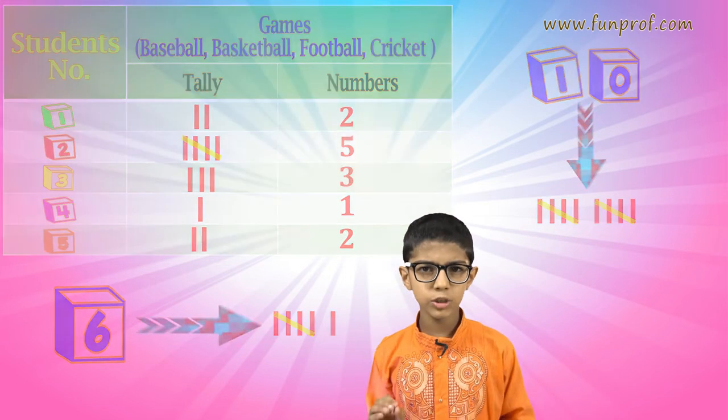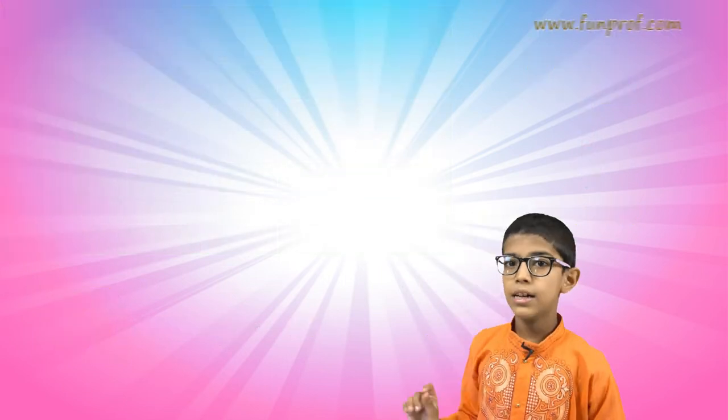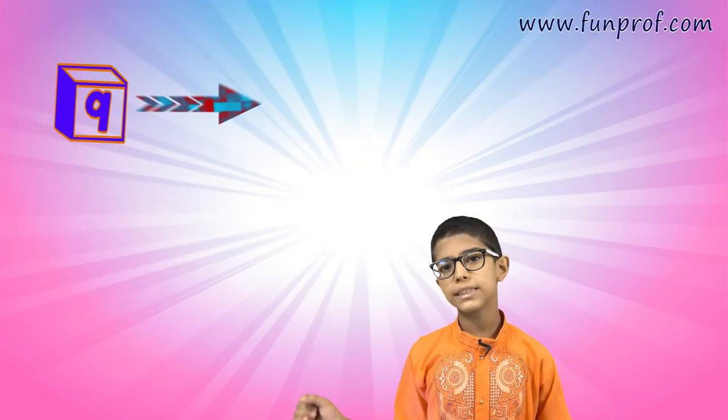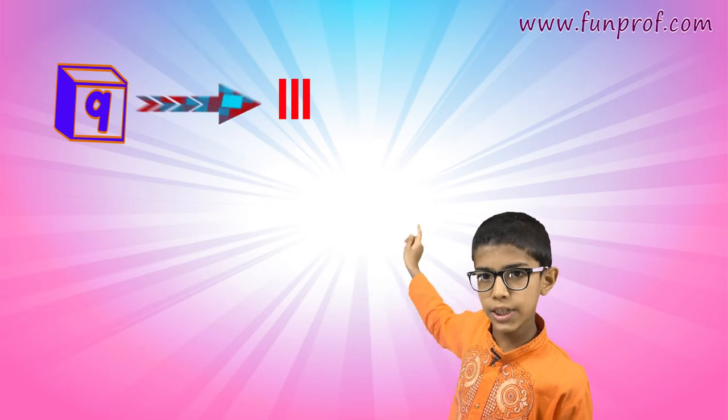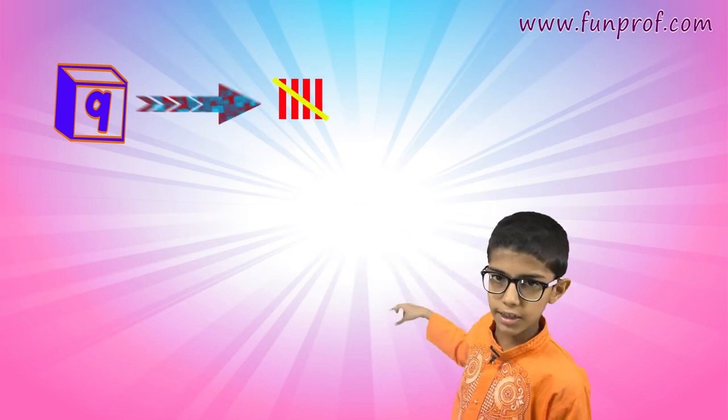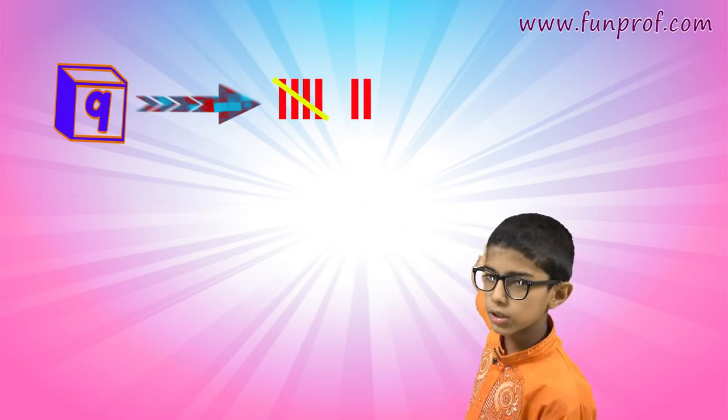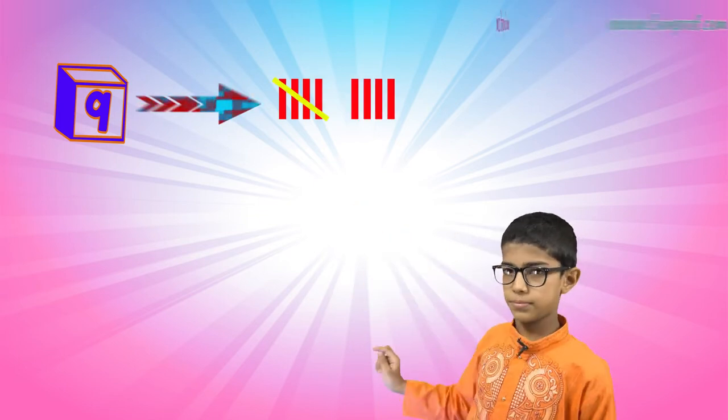It's so simple! Now, how will you represent 9? You write 1, 2, 3, 4, cut — that's 5 — and then 1, 2, 3, 4. So 9 is one complete group of five plus four individual lines.